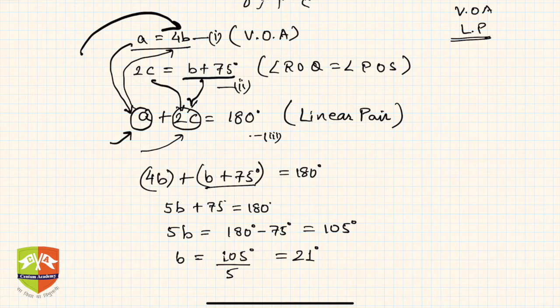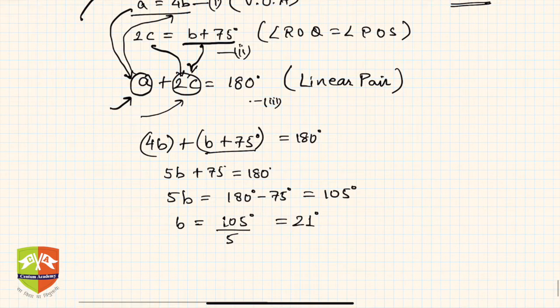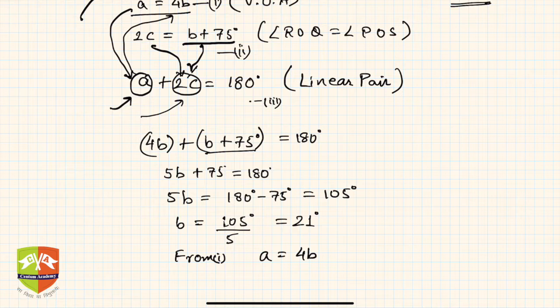Now if b is 21 degrees, I can use equation one. From one, what is a? a is 4b. See equation number one here, a is 4b. So this implies a is equal to 4 into 21, which is equal to 84 degrees.